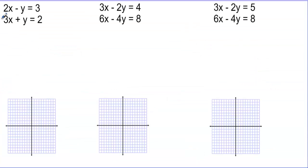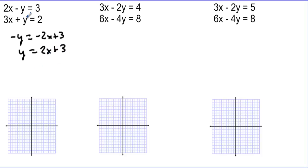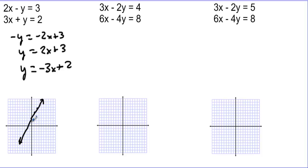When given two lines, there are three things that could possibly happen. Let's graph the first two. We have negative y equals negative 2x plus 3, giving y equals 2x plus 3. Setting the second to slope-intercept form gives y equals negative 3x plus 2. The first line has a y-intercept of 3 with slope 2 — up 2 and over 1. The second crosses at positive 2 with slope negative 3 — down 3 and over 1. These lines have one solution.